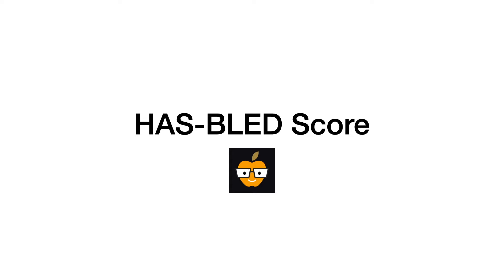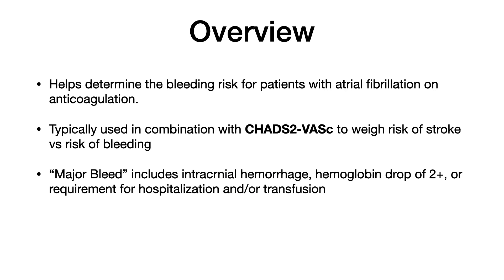As the next video in my clinical scales series, we're going to talk about HAS-BLED scores. A HAS-BLED score helps determine the bleeding risk for patients who have atrial fibrillation and are either on anticoagulation or you're considering anticoagulation. This is typically used in combination with, as the most recent video suggested, the CHADS-2 VASC score. Recall that CHADS-2 VASC helps you determine the risk of stroke and whether you need to put somebody on anticoagulation — that needs to be balanced against the HAS-BLED score, which reflects the risk of bleeding once they're on anticoagulation.